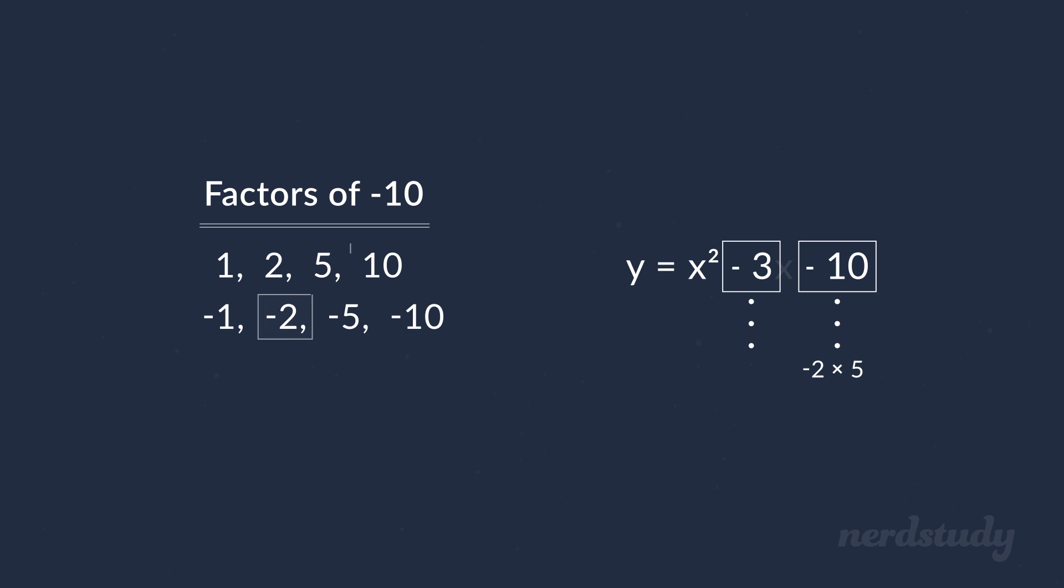Let's try negative 2 and 5. Multiplying them would give us negative 10, which again works, but positive 3 when added. This is close, but it's still wrong. However,